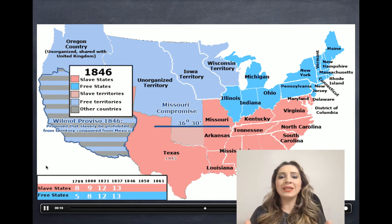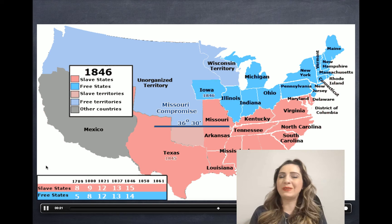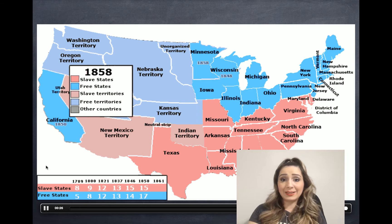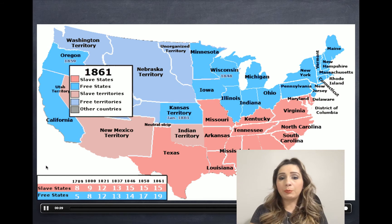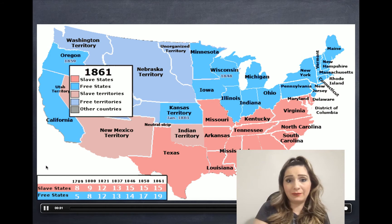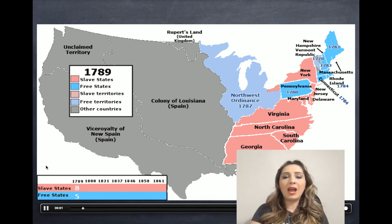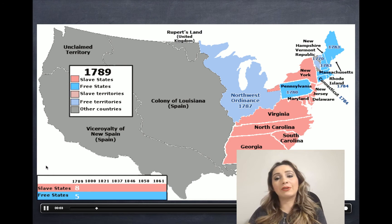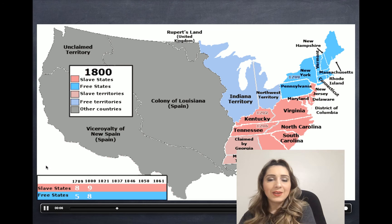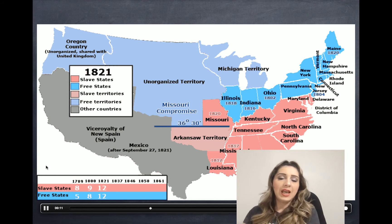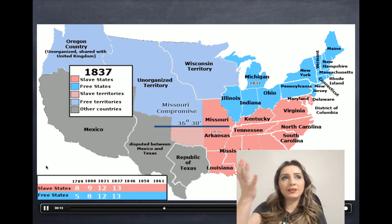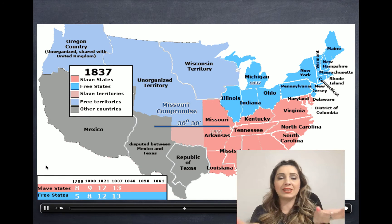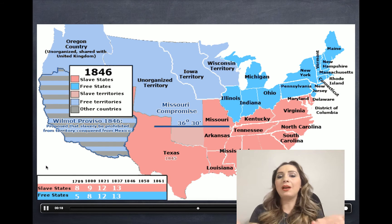Why is there a need for balance in Congress between free and slave states? If you have more states representing people who are for slavery, you're going to pass laws in your favor. If you have more northern states against slavery, they'll try to pass laws to outlaw it. So keeping that balance becomes a major cause of the civil war.